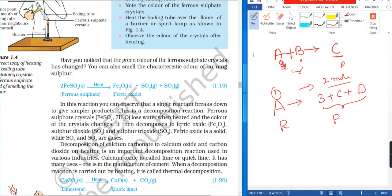It then decomposes to ferric oxide (Fe2O3), sulphur dioxide (SO2), and sulphur trioxide (SO3). Ferric oxide is a solid while SO2 and SO3 are gaseous.